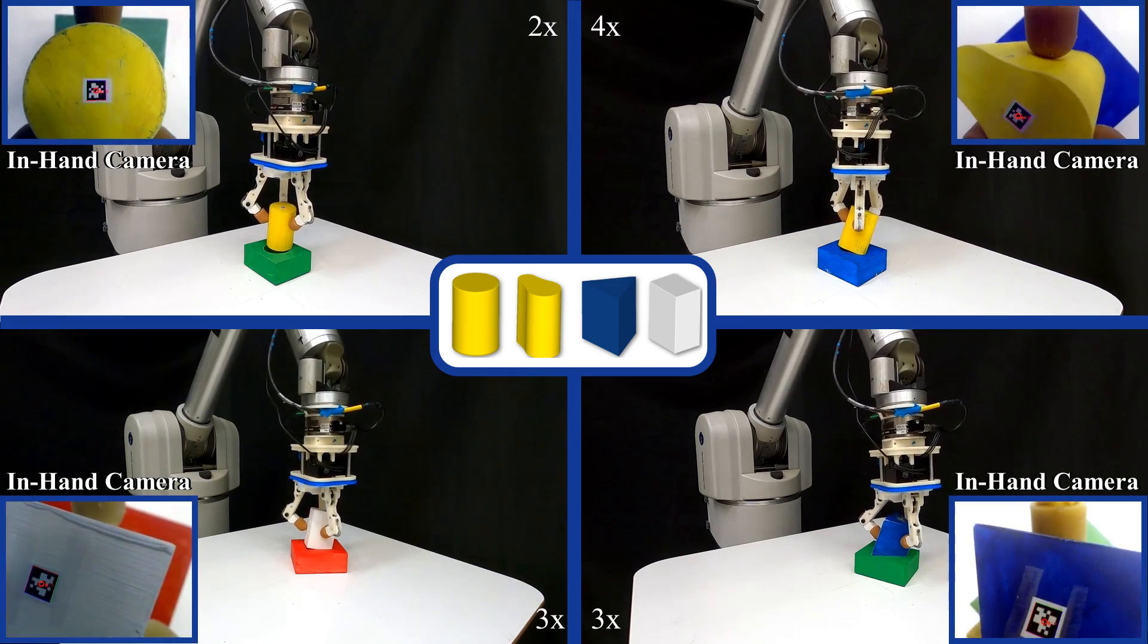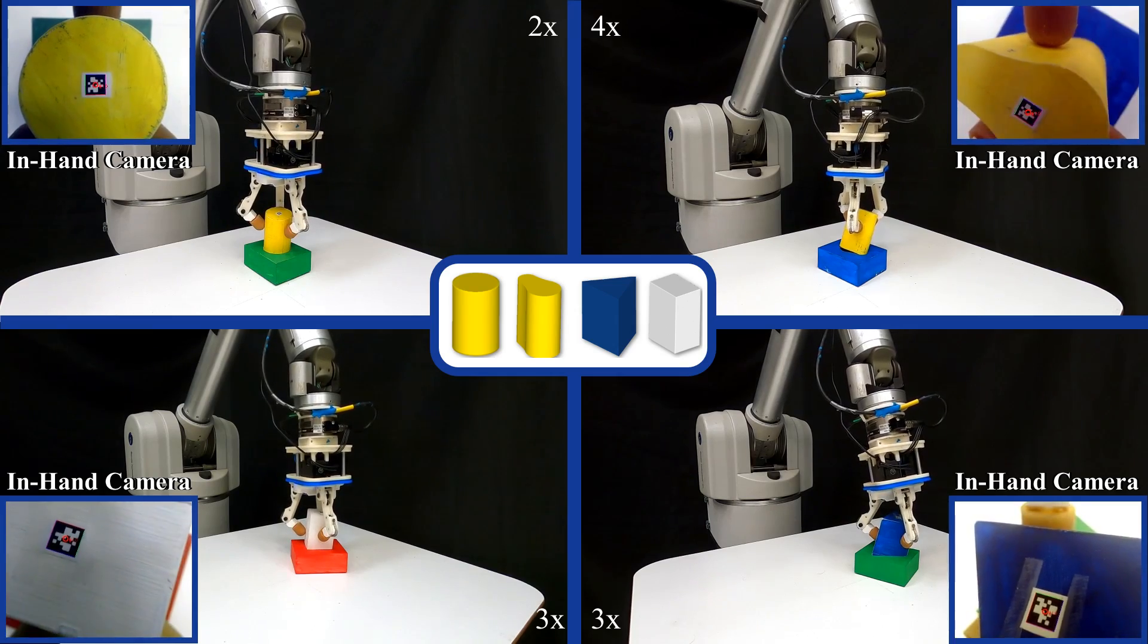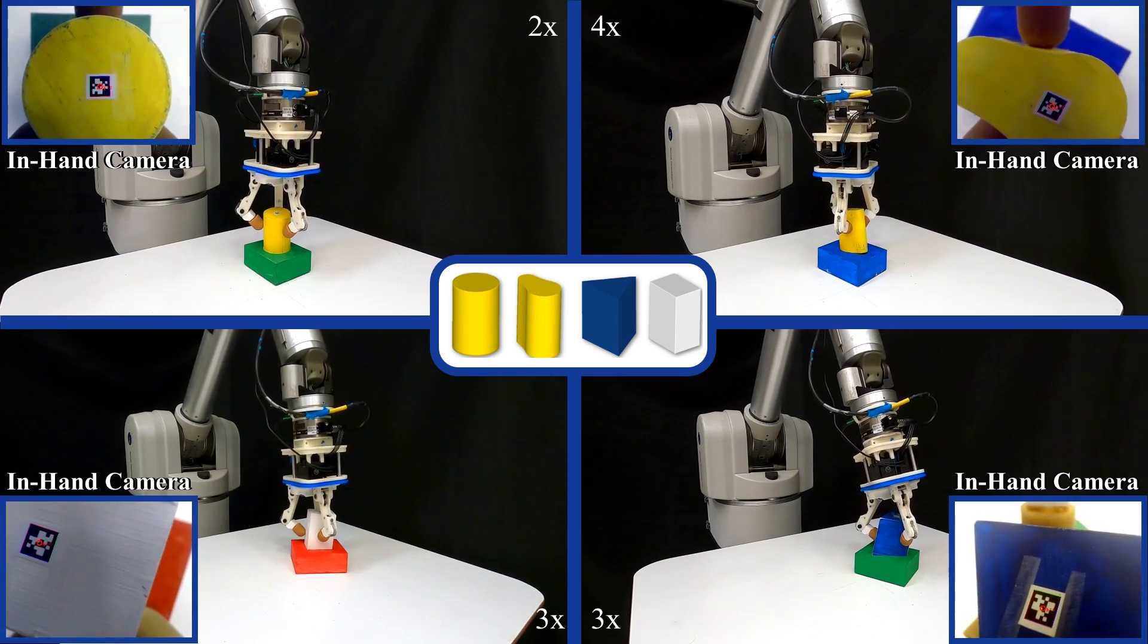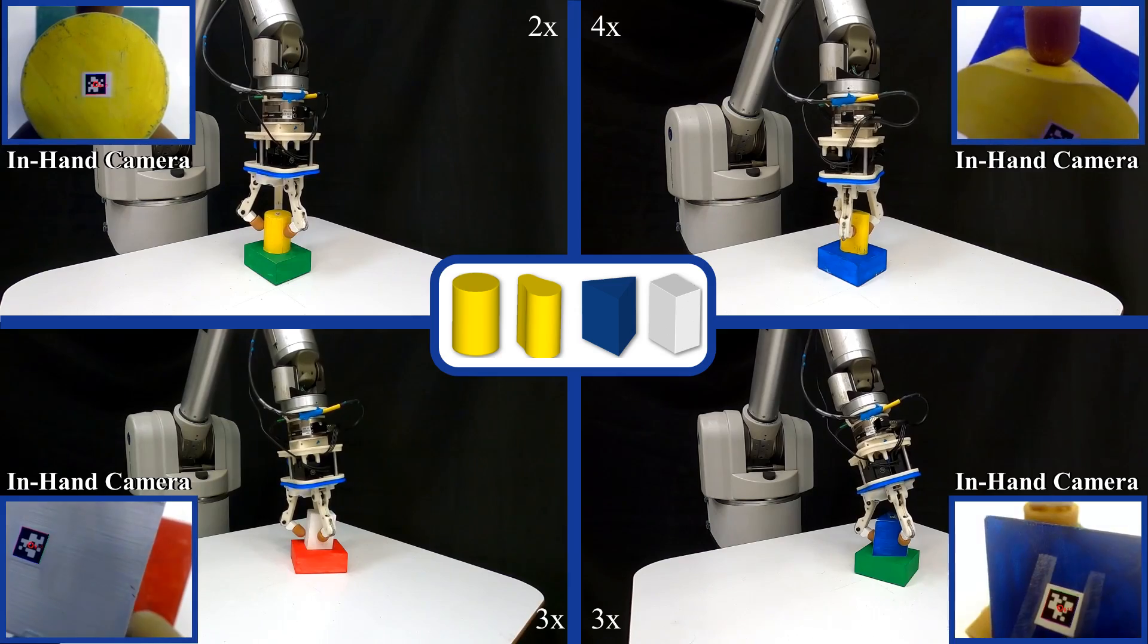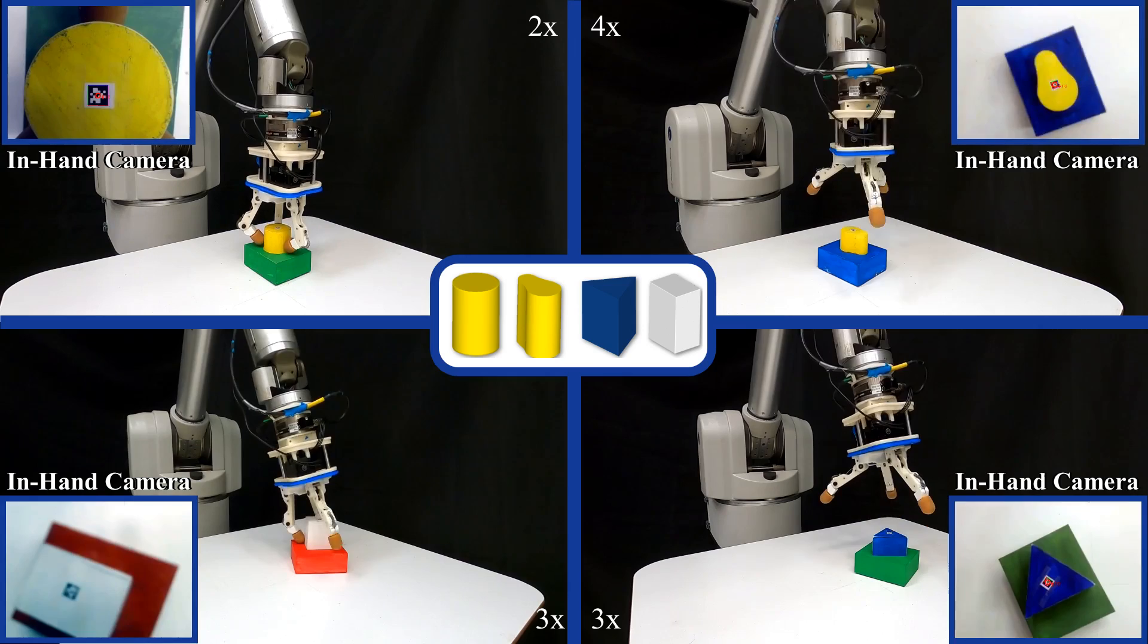Since our method is object-agnostic, it relies specifically on forces and the estimated contact formations during insertion. It has no knowledge of the object or hole's geometry. This provides for a generalized approach to insertion that leverages compliance for maintaining desired contact formations.